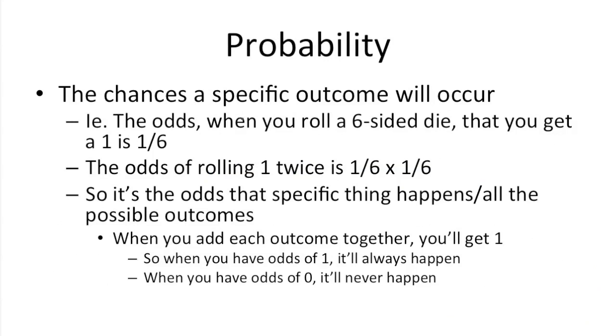So moving on to probability. When you have a probability question, you're looking for the chances that a specific outcome will occur. So for instance, when you roll a 6-sided die, the odds that you roll a 1 is 1 out of 6. So the odds that the specific thing happens will always go over all the possible outcomes. You're looking for 1. There's only one 1 on a die, and there's 6 possibilities, so 1 over 6. If I were to ask you the odds of rolling 1 twice, you would take that 1 over 6 and multiply it by 1 over 6. The chances you roll 1, the chances you roll 1. When you add every possible outcome together, you'll always get a total of 1. So the odds of rolling a 1 is 1 out of 6, and the odds of rolling not a 1 are 5 out of 6. So 1 sixth plus 5 sixth gets you 1. When you have odds of 0, it just means that it'll never happen.